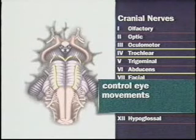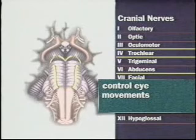The oculomotor nerve is also responsible for pupillary constriction and raising the upper eyelid. Check the position of the upper eyelids while the patient looks directly at you. The eyelids should be symmetrical and should not obscure the pupils.